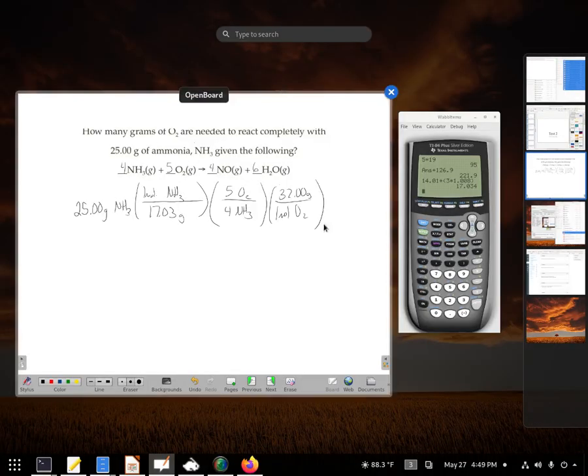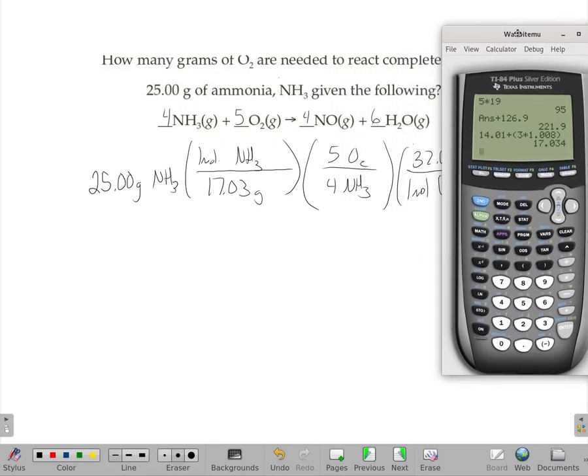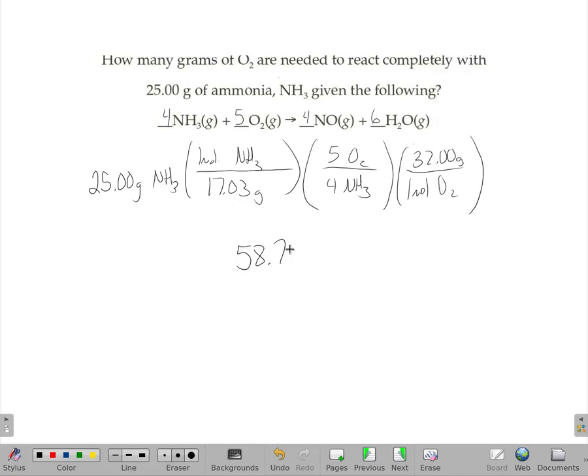And that should give me the steps I need to get the mass of oxygen. So 25 divided by 17.03 times 5 divided by 4 times 32 gives me a mass of 58.71, and that should be the mass of the oxygen that's needed.